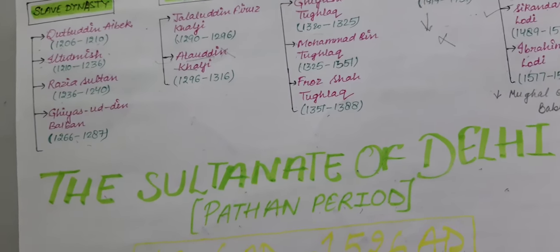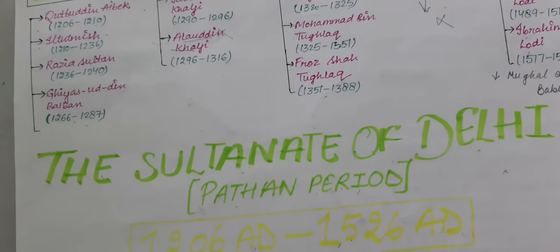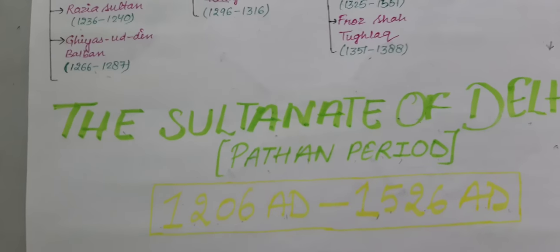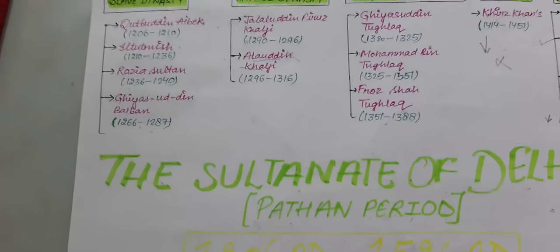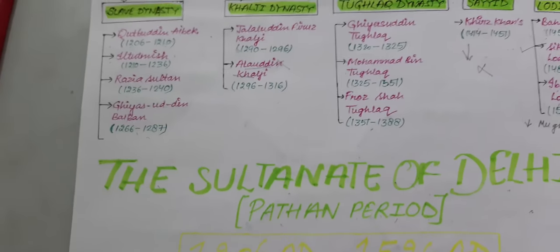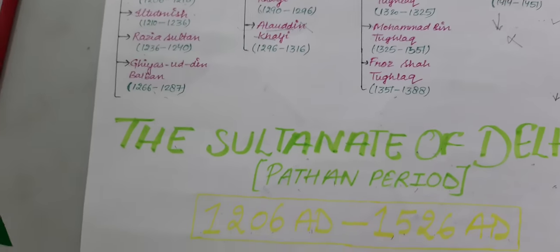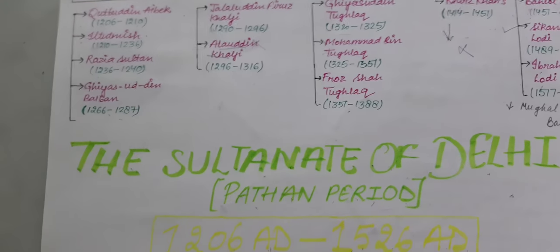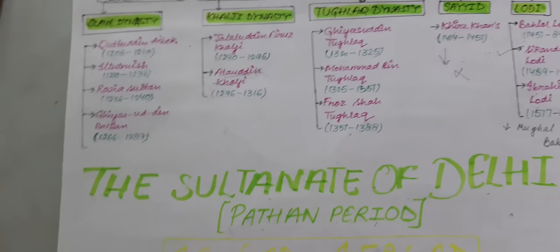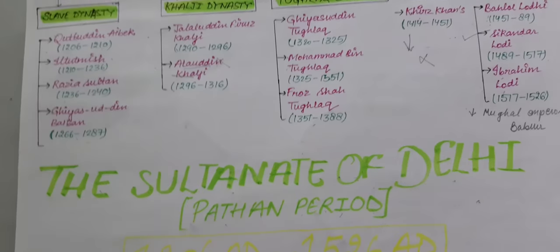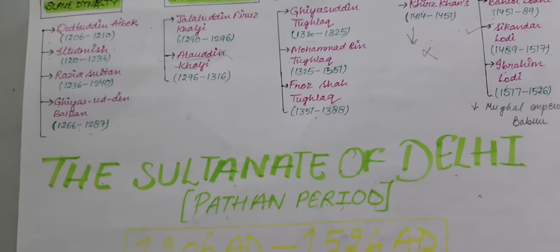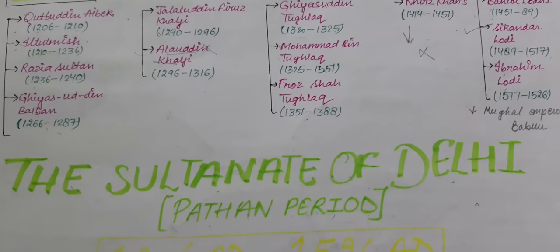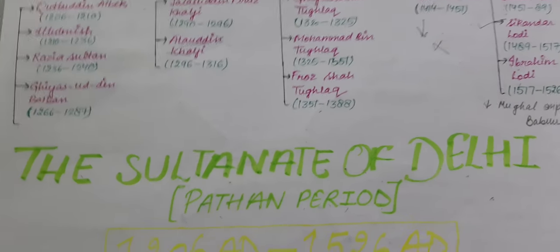Approximately for 300 years they ruled over us — around 307 years in total. In the next video we will study each dynasty one by one. So stay waiting for the next video. Until then, bye bye.